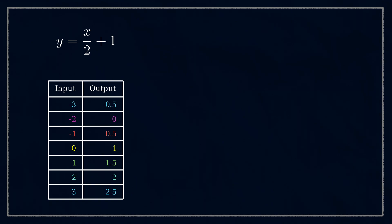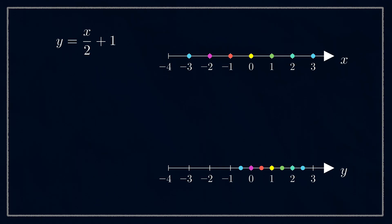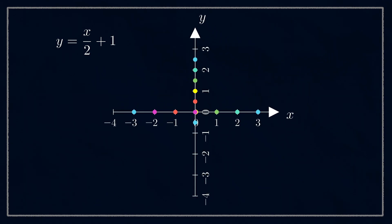We could look at some example values in a table, or we could plot it on two number lines, where each value in the input has a corresponding value on the output. This can be a bit hard to interpret though, so we usually turn it into a 2D plane, where we have the horizontal axis representing the input value X, and the vertical axis representing the output value Y, and then we can start to see the effect of the function visually.